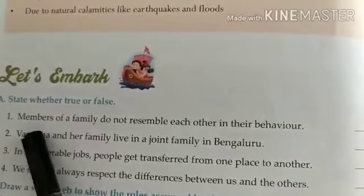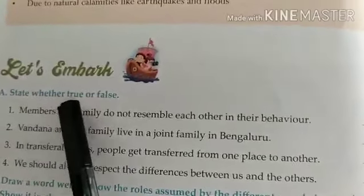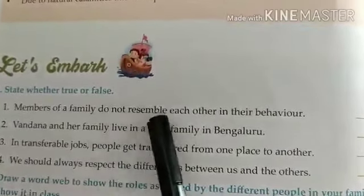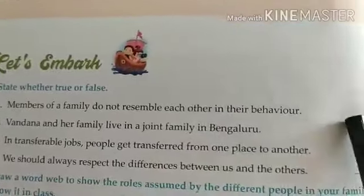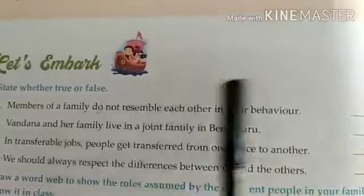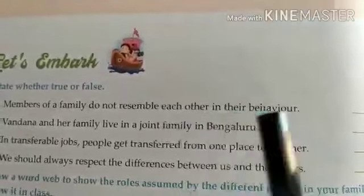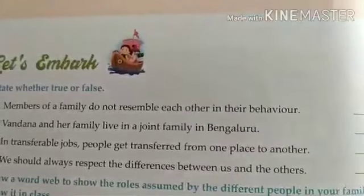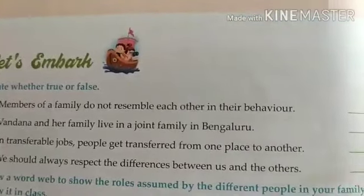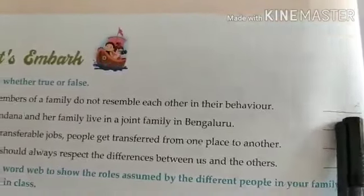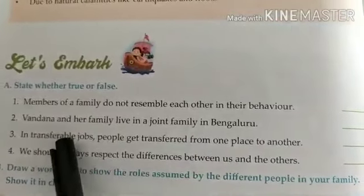Here we have the first true-false statement: 'Members of a family do not resemble each other in their behavior.' All family members — do they not resemble each other in behavior? The answer is false, because they do resemble each other to some extent.